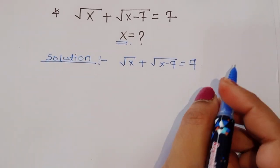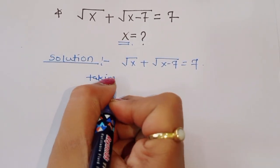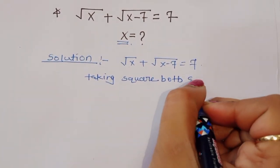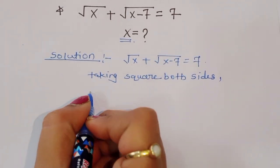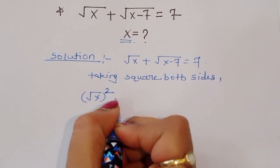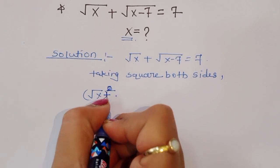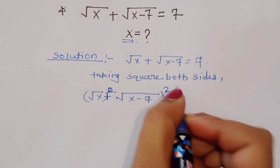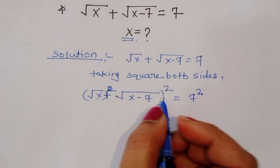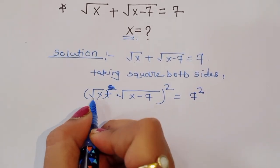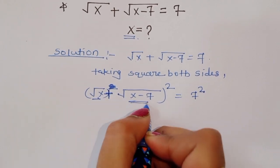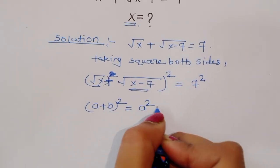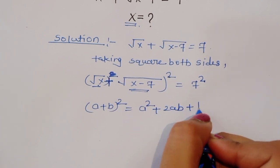Now we can do one thing: take the square of both sides. We will get square root of x plus square root of x minus 7, the whole square, is equal to 7 squared. Now this is an a plus b square, so we know the formula: a plus b whole square is equal to a squared plus 2ab plus b squared.